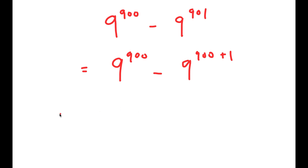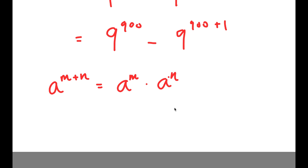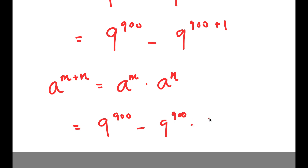Now I can use the exponential property: a to the power of m plus n is equal to a to the power of m times a to the power of n. So I get 9 to the power of 900 minus 9 to the power of 900 times 9 to the power of 1.